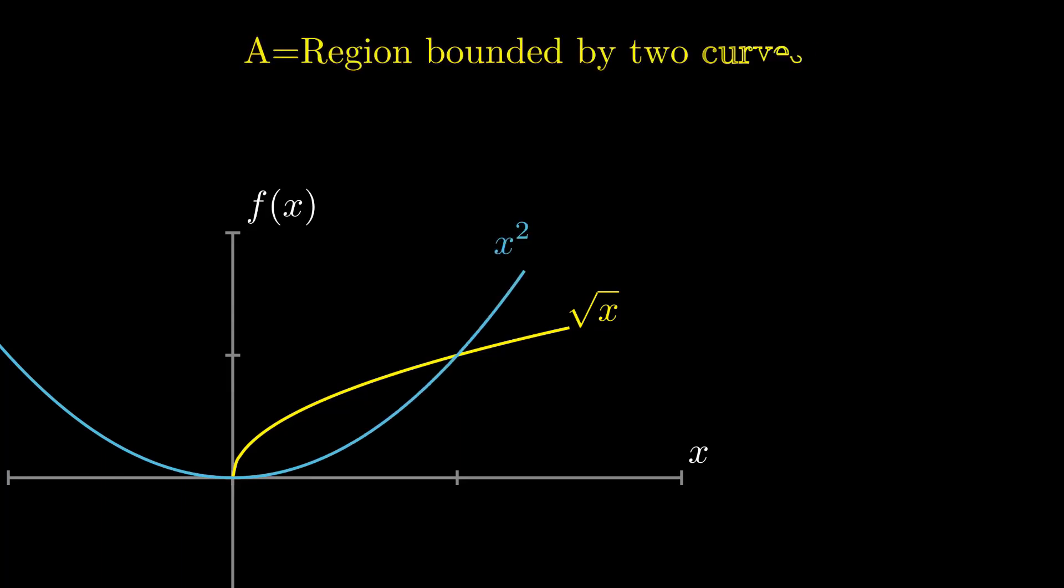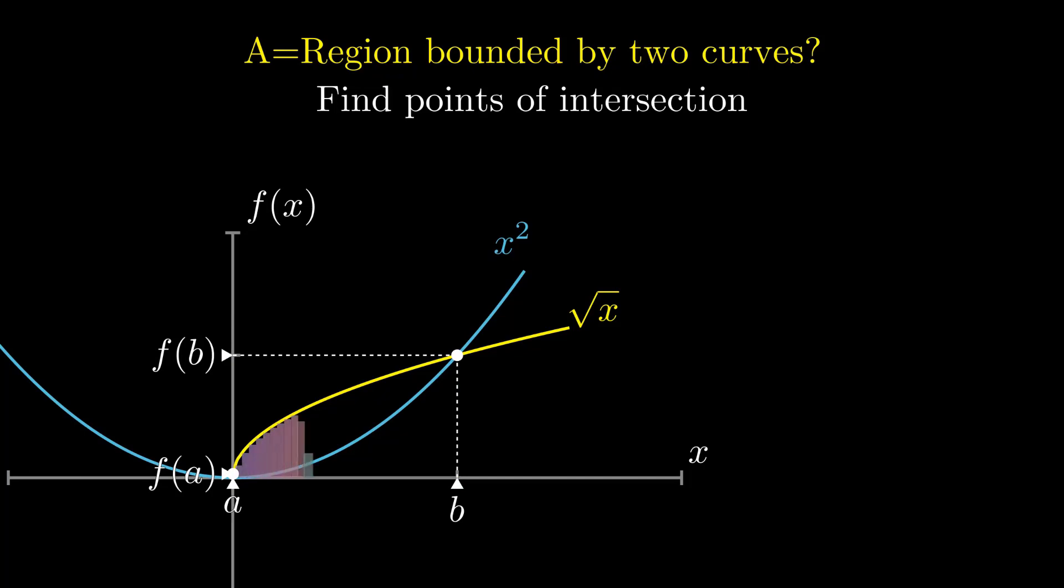This curve represents the square root of x. This blue curve represents x squared. The area confined between two curves can be calculated. Let's first find the intersections, then find the area under the first curve and the area under the second curve.